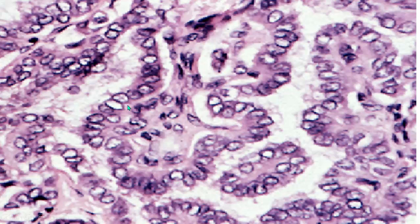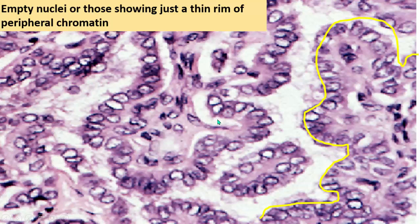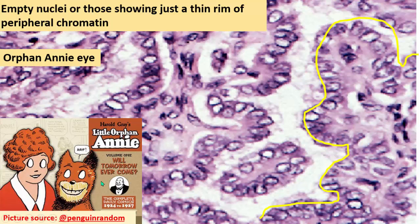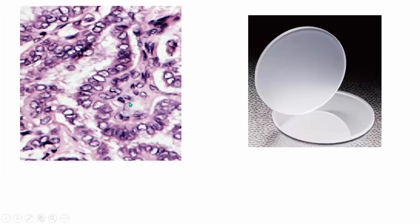One important nuclear feature is nuclear clearing. Almost all the nuclei appear empty looking, or showing just a thin rim of peripheral chromatin. This nuclear appearance in papillary carcinoma is referred to as the orphan Annie eye appearance, based on the cartoon character Annie by Harold Gray, who is depicted with eyes that have no pupil. The other name given to these nuclei is the ground glass appearance, referring to a surface that has been ground to produce a flat but matte finish — papillary carcinoma nuclei resemble this.